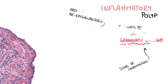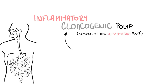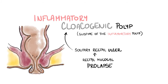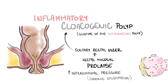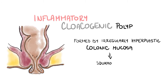An inflammatory cloacogenic polyp is a particular subtype of the inflammatory polyp. It progresses from the so-called solitary rectal ulcer as a consequence of rectal mucosa prolapse during increased intraluminal pressure, usually in patients with chronic obstipation. On the histological level, it is formed by irregularly hyperplastic colonic mucosa that continues to squamous epithelium of the anal canal.